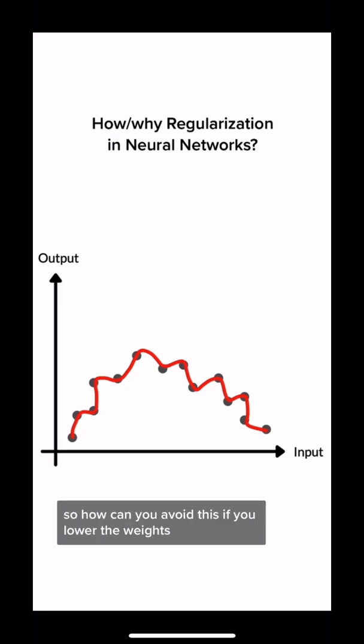So how can you avoid this? By lowering the weights. That's why when we are fighting overfitting in neural networks, what we aim to do with regularization is to lower the weights that we have.